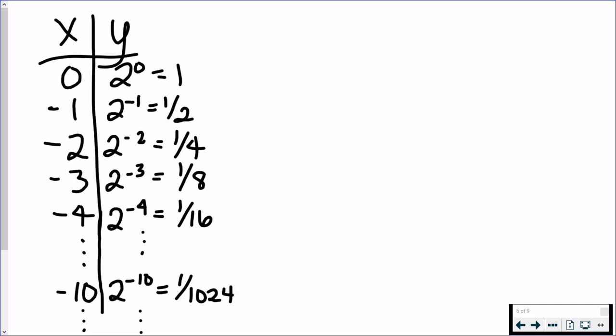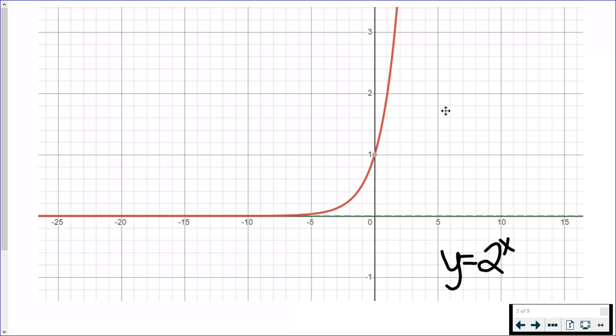So, we're getting smaller, we're getting close to 0, but it'll never actually touch 0. If you want to plug in 2 to the negative 100, your calculator may or may not be able to handle that, but it will not equal 0. It'll just be a very small number close to 0.